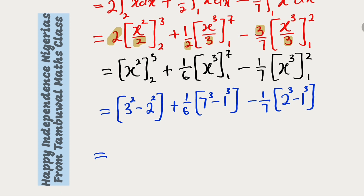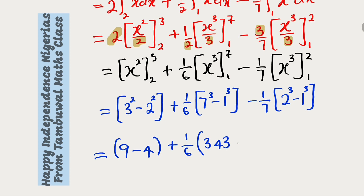Let us simplify this. 3 to the power of 2 is 9, minus 2 to the power of 2 is 4. Plus 1 divided by 6 multiplied by 7 to the power of 3, which is 343. Minus 1 to the power of 3, which is still 1. Minus 1 divided by 7. 2 to the power of 3 is equal to 8, minus 1 to the power of 3 is equal to 1.